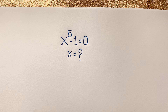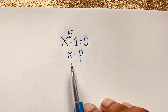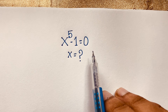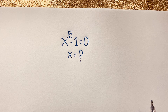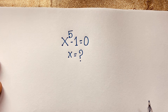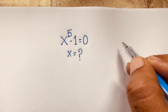Hello everyone, welcome to Russia's classroom. Today we are solving an international math olympia question, which is x to the power 5 minus 1 equal to 0. What is x equal to? How to solve this interesting math problem?